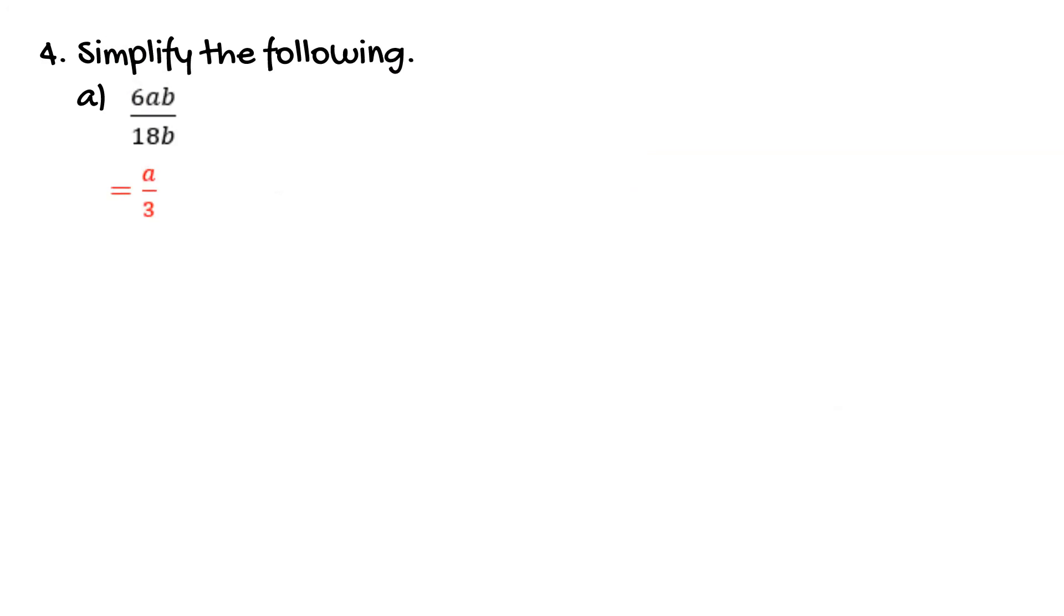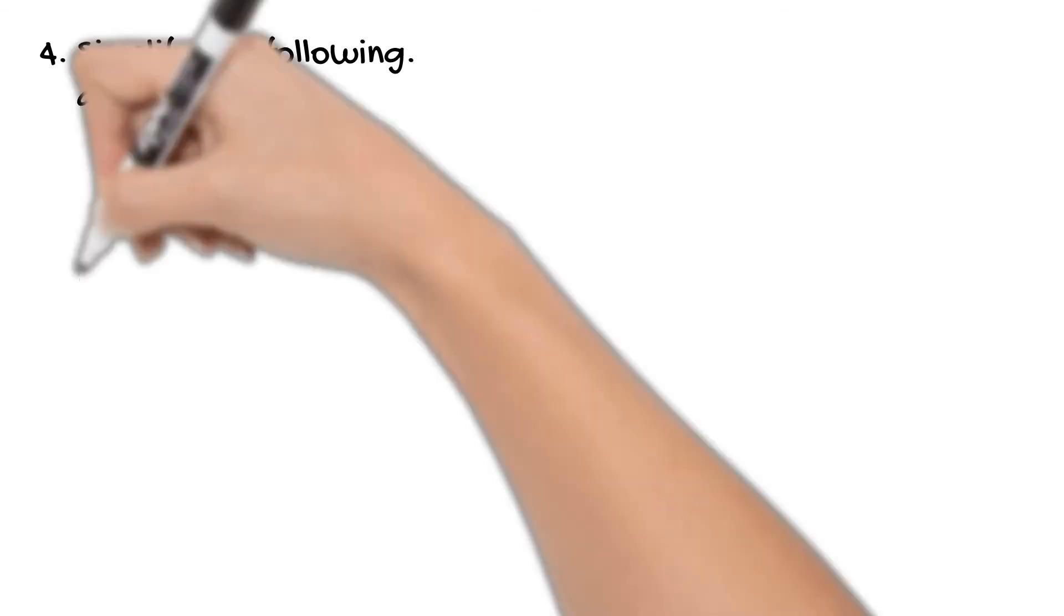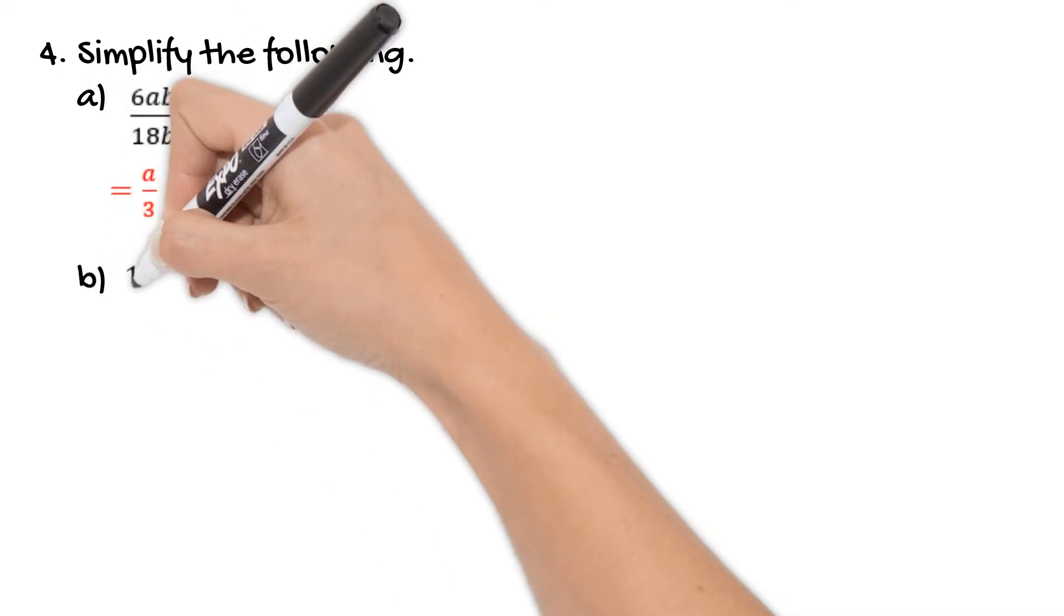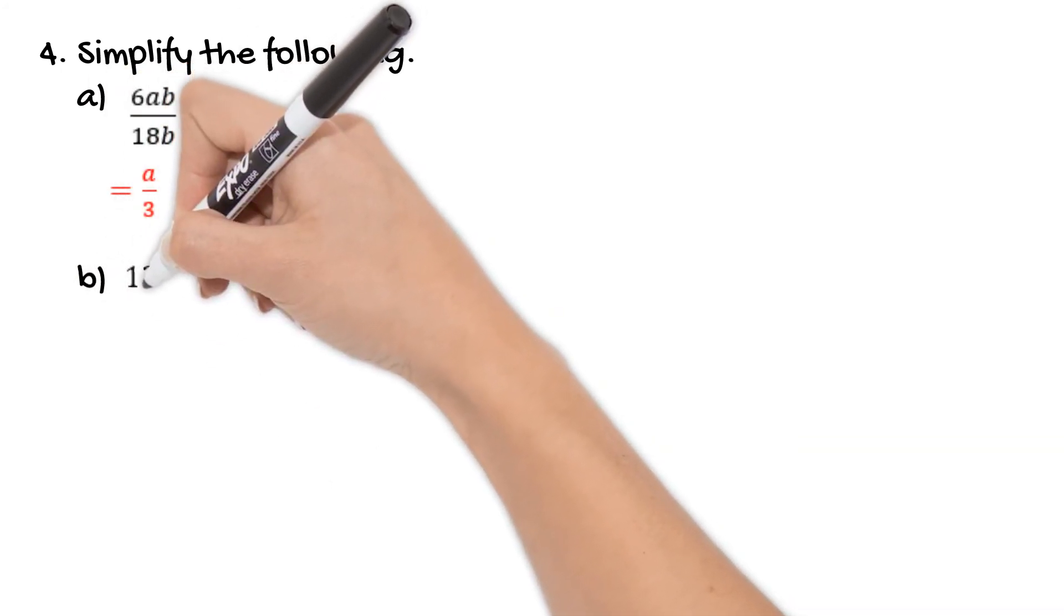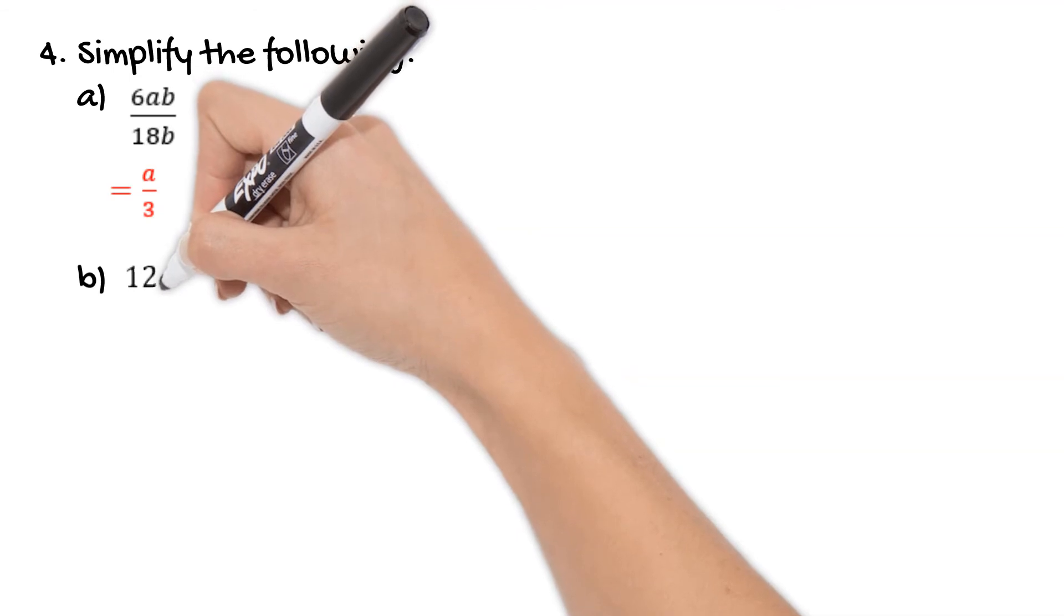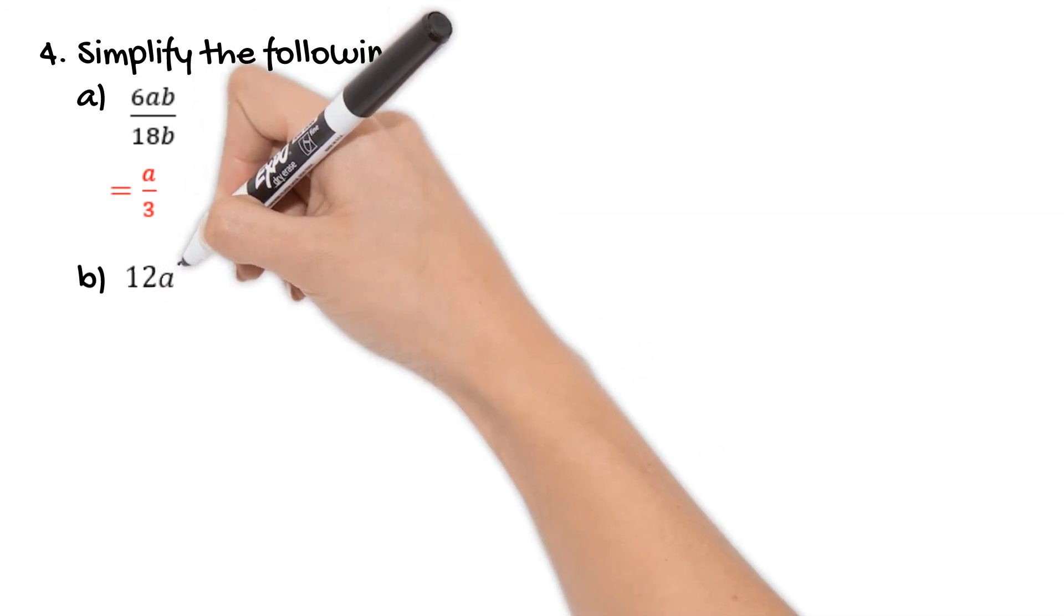So our second example has been written as a division. For us to work with it we need to rewrite it as a fraction. So we'd rewrite that as 12a squared b over 3ab and then we just simply work with our numbers and our pronumerals separately. So 12 over 3 is of course 4. So that means I have a value of 4 on the top.